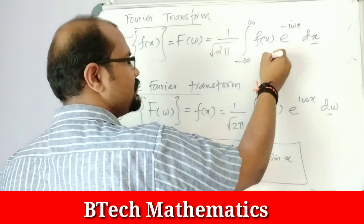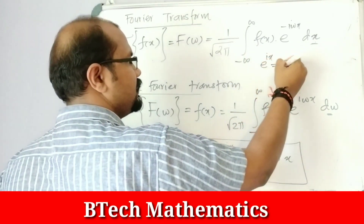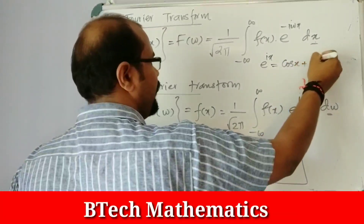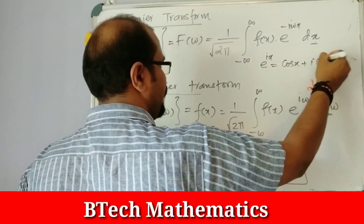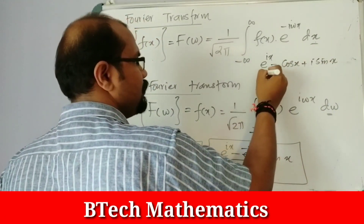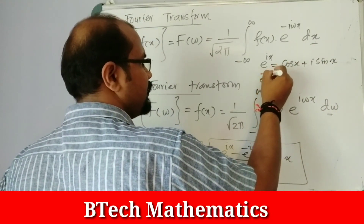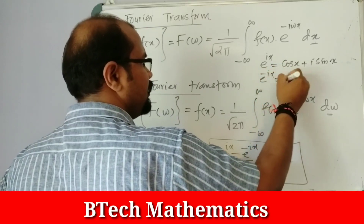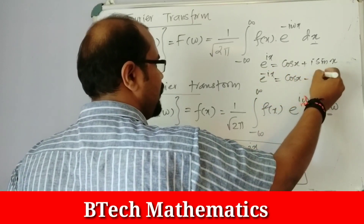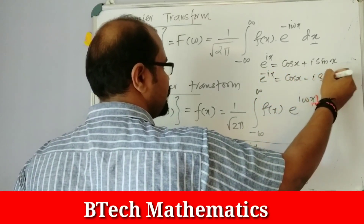Also recall: e raised to ix equals cos(x) plus i·sin(x), and e raised to minus ix equals cos(x) minus i·sin(x).